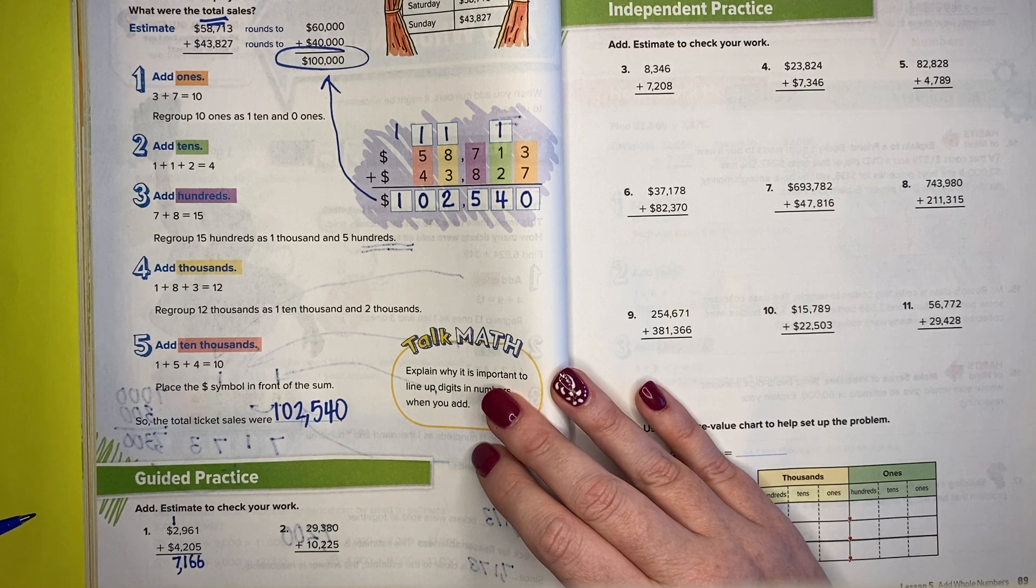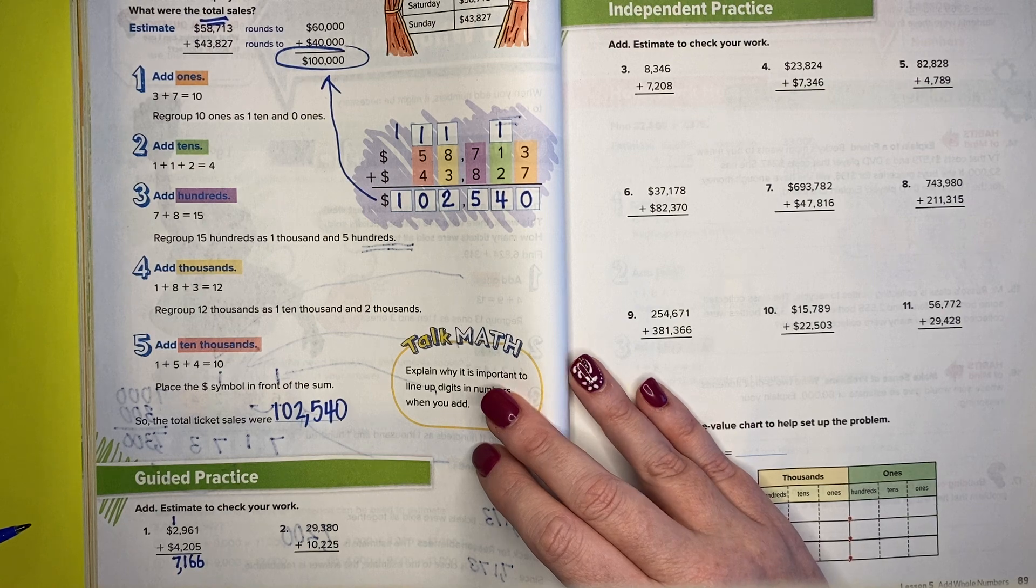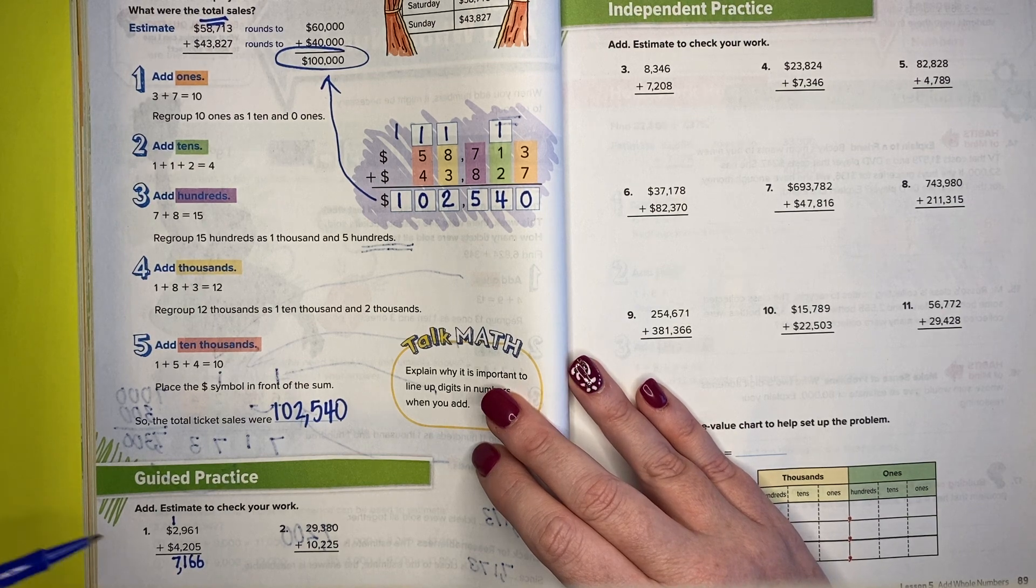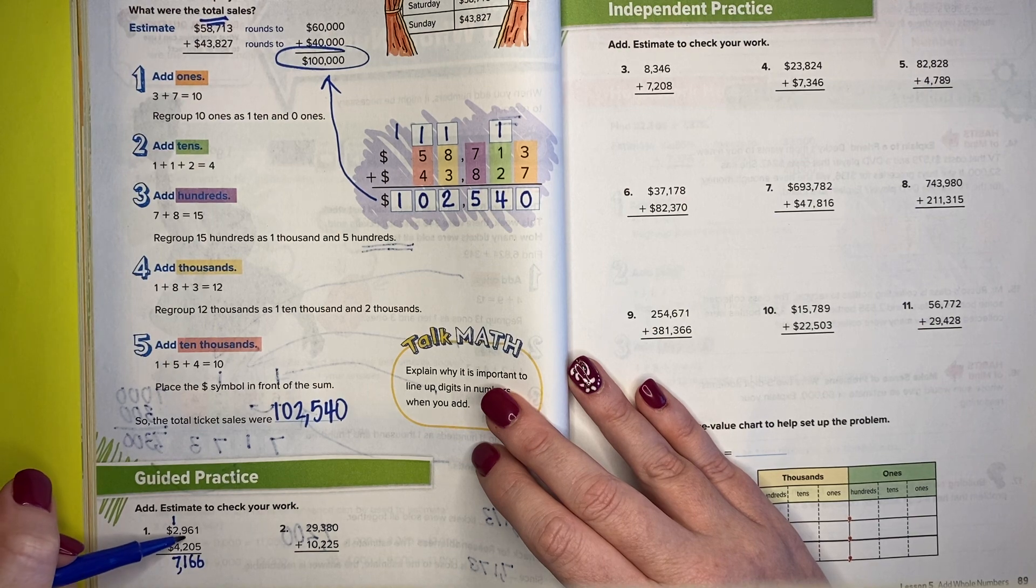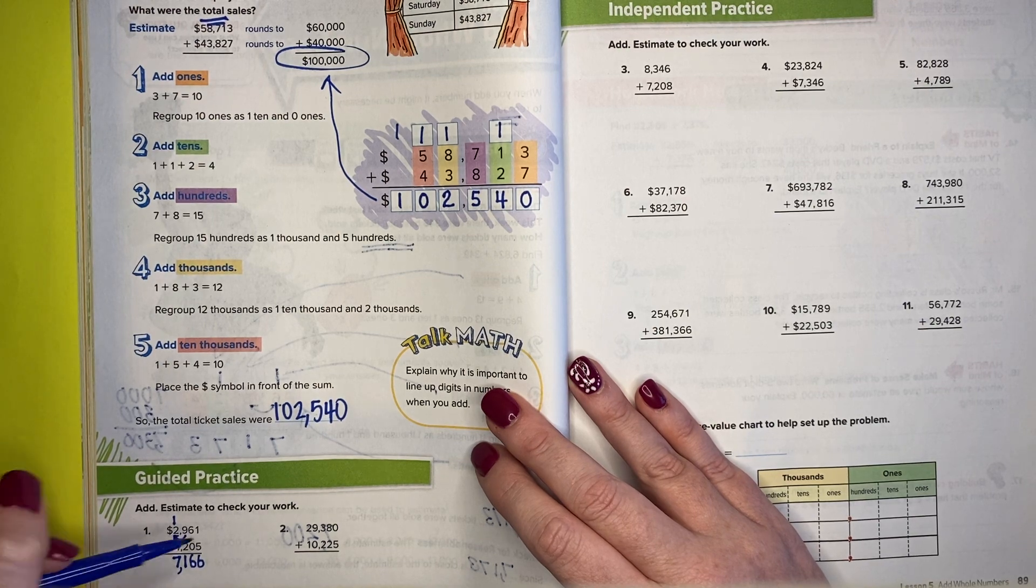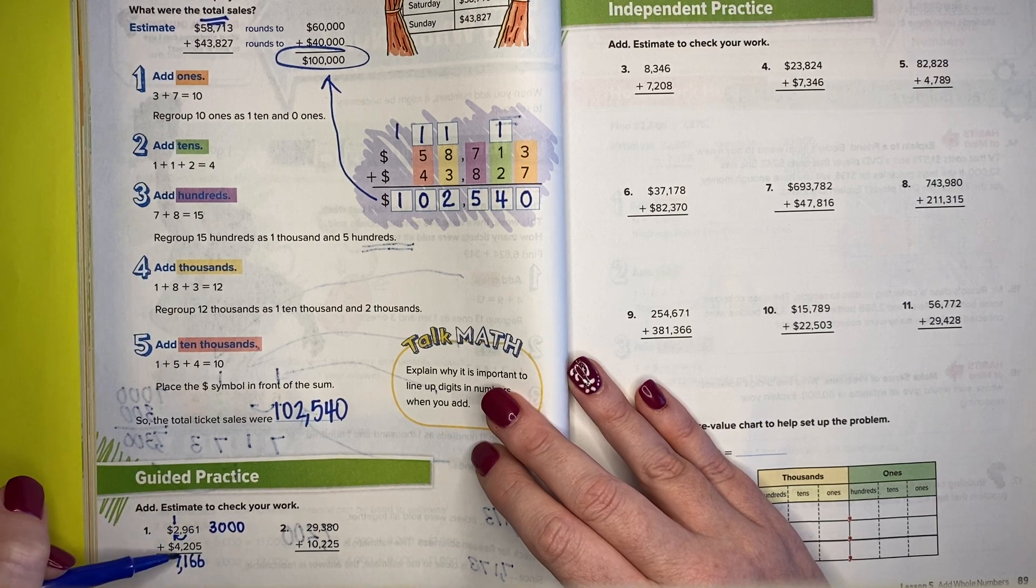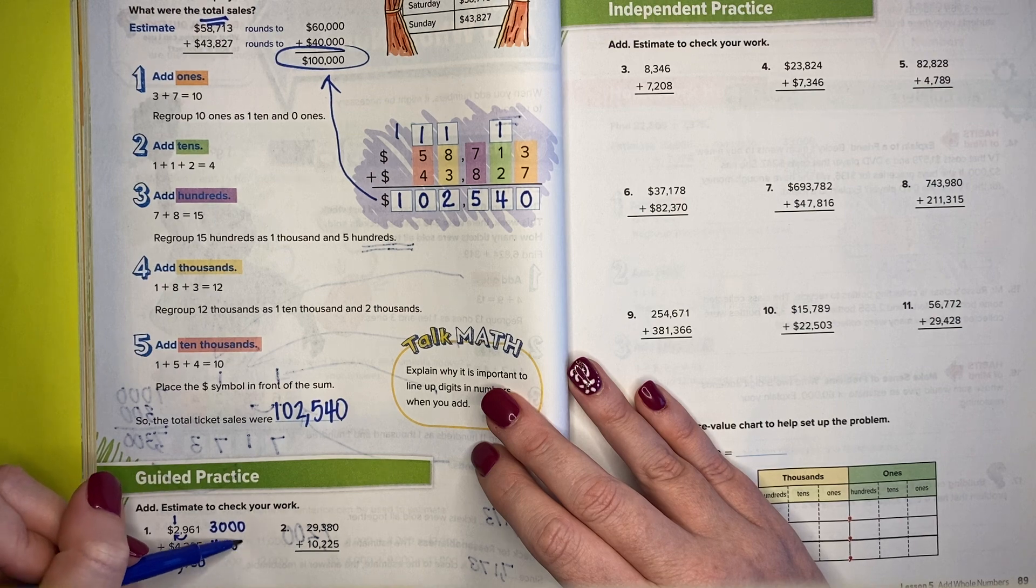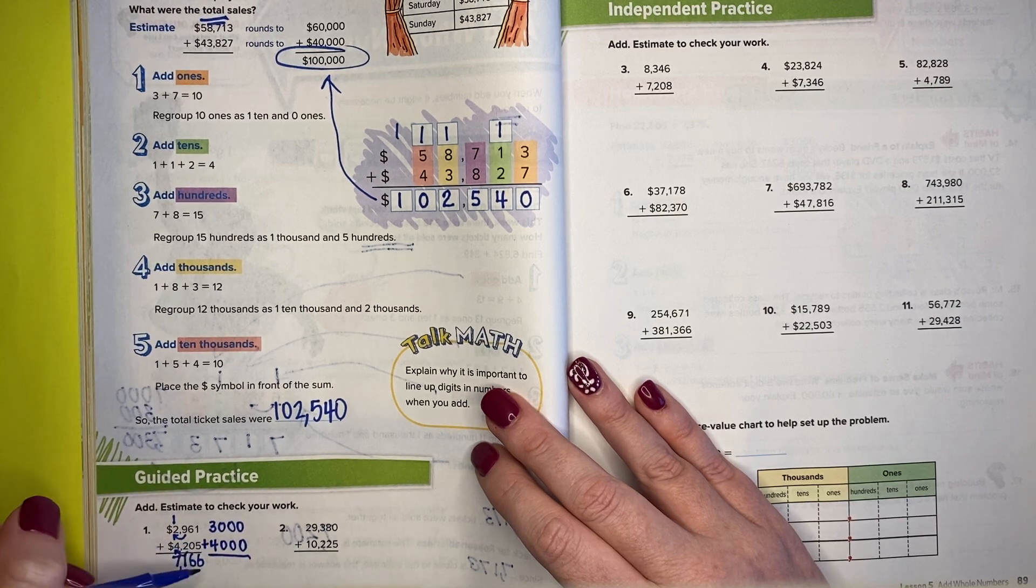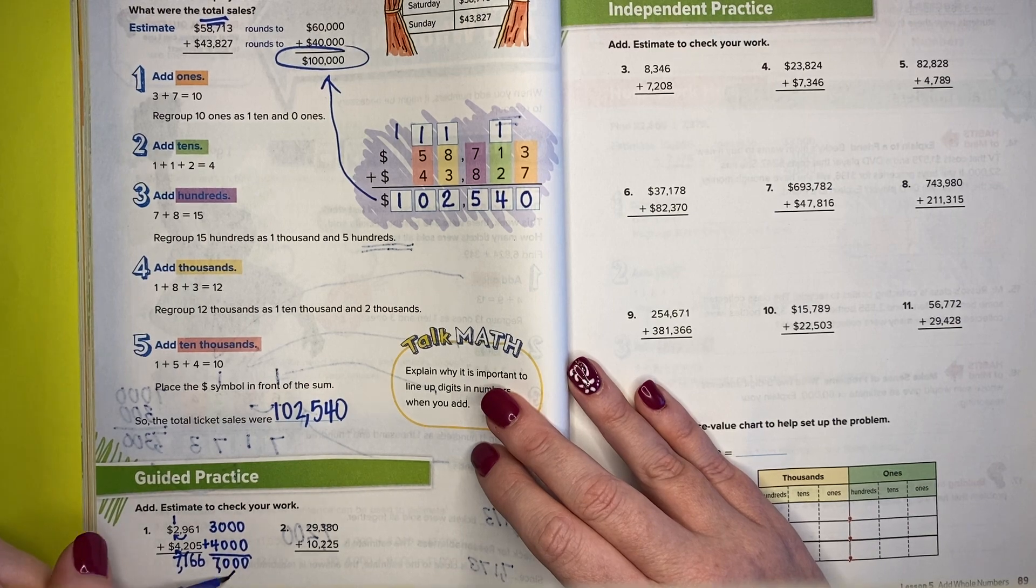Now what I want to do is check for reasonableness and see if my estimated answer is close to my actual answer. So if I estimate, I'm going to say this 9 tells this 2 to be a 3, so that would be about 3,000. This 2 tells this 4 to stay, so that would be about 4,000. So if I add 3,000 plus 4,000, I would get 7,000. 7,000 is pretty close.